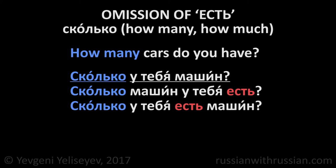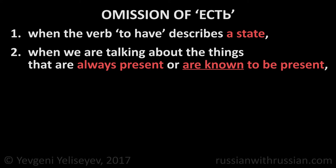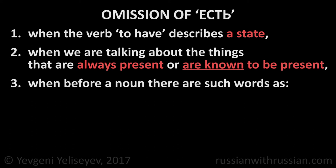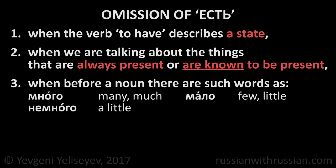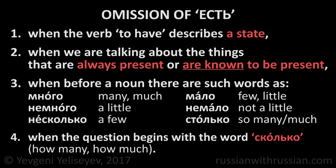As you can see, everything depends on context. But if you have doubt about whether to use the word есть or not, it's better to omit it: when the verb 'to have' describes a state; when we talk about things that are always present or known in advance; when before a noun there are words like много, мало, немного, немало, несколько, столько; and when the question begins with сколько (how many/how much).